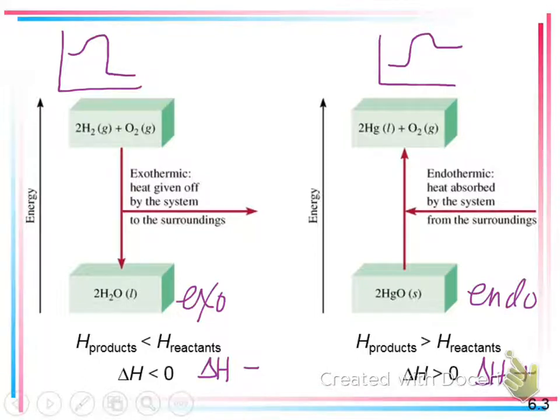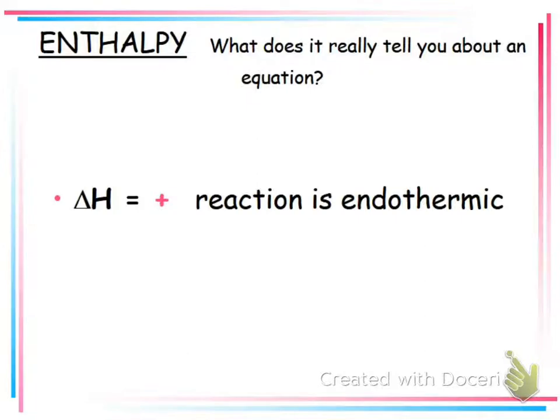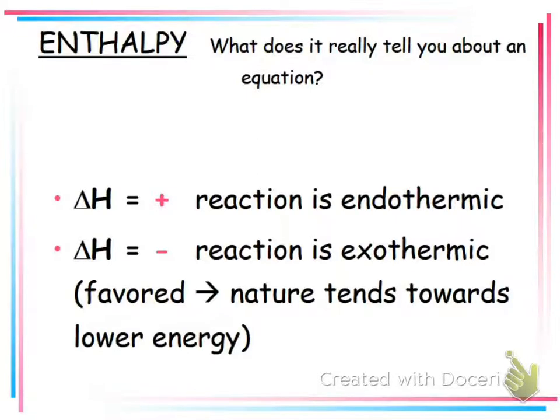So if you see a positive delta H, that means it's endothermic. If you see a negative delta H, it's exothermic. And that's going to be an important concept to have down, not only for our worksheet, but obviously for the test. If it is a negative delta H, that tends to be favored thermodynamically, meaning spontaneous.